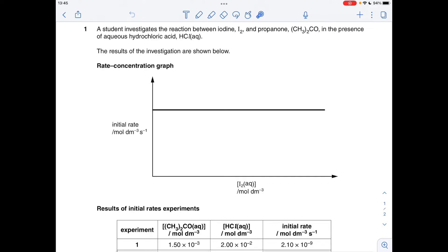Okay, so the first thing we've got to do is establish the order of reaction for the three reactants that we've got. So iodine we're going to get from the graph, and obviously the propanone and the HCl we'll get from the table.